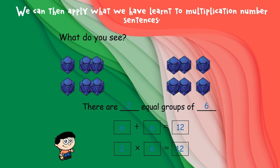We then apply what we've learned to multiplication number sentences, moving from smaller to larger numbers. We look at repeated addition — so six add six equals twelve, which is the same as two lots of six or six lots of two. Ask the children what special word this means — they should tell you that it's commutative.